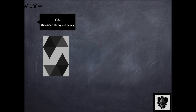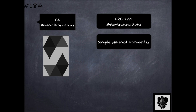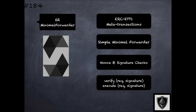The minimal forwarder library provides support for implementing the trusted forwarder discussed in the context of ERC 2771 meta transactions. It implements a simple minimal forwarder that verifies the nonce and signature of the forwarded transaction before calling the destination contract. It does so with two functions: the verify function for verification of nonce and signature, and the execute function for executing the specific function on the destination contract.